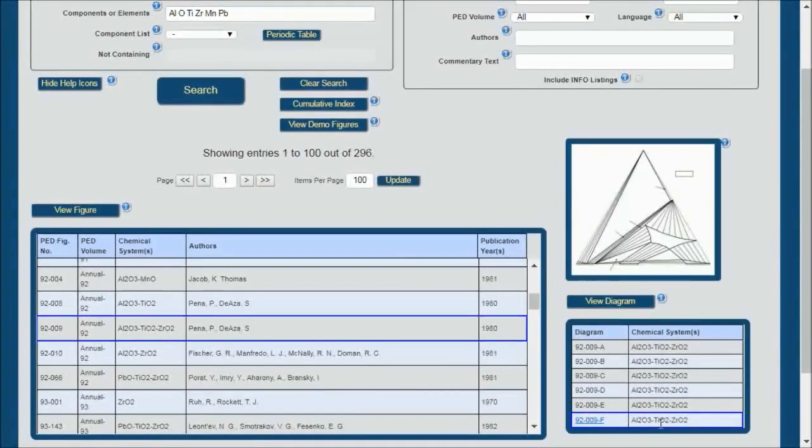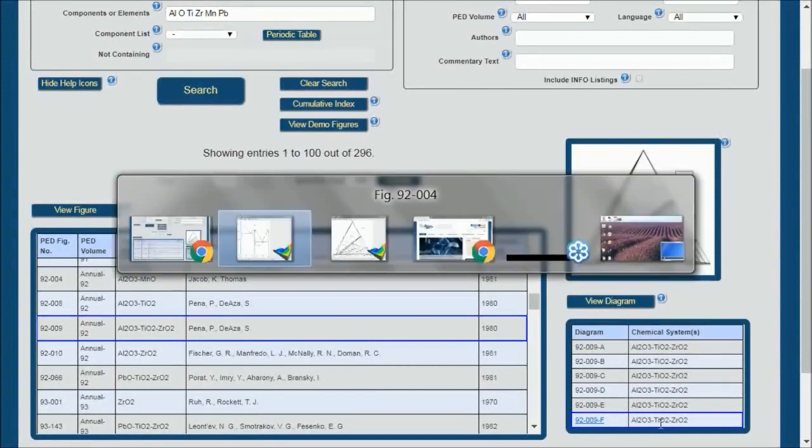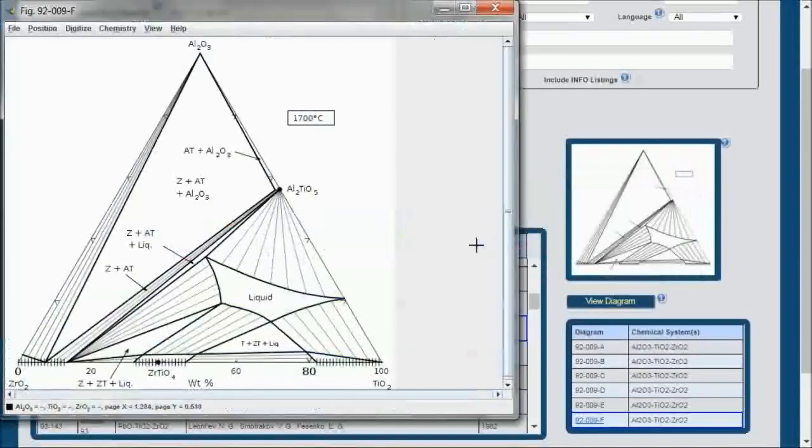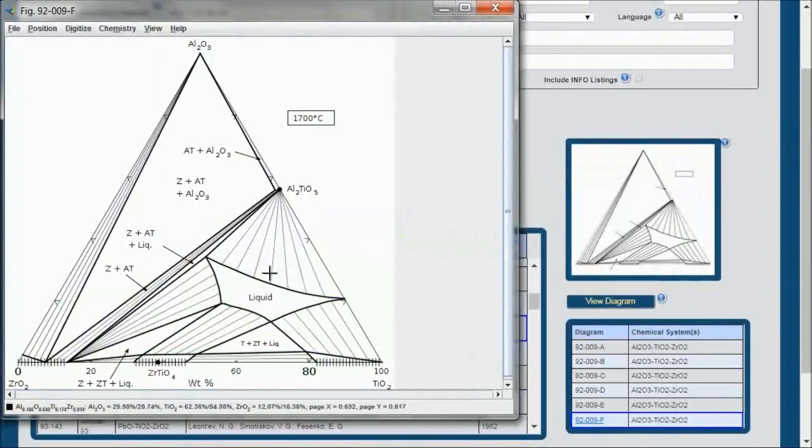Now let's take a look at how the PED software handles a ternary diagram. On a ternary diagram, there is no temperature. So the PED viewer software gives you the values for the three compounds that make up this phase diagram. At this point, you can see that alumina is approximately 23%, titania is approximately 56%, and zirconia is approximately 20.5%.